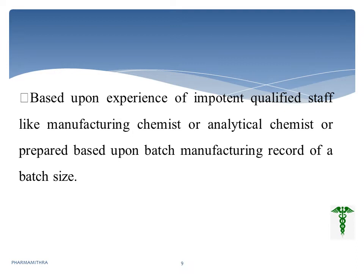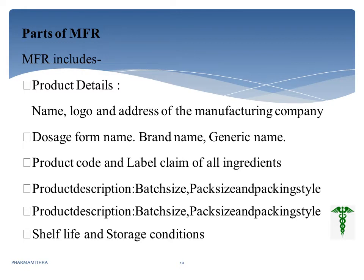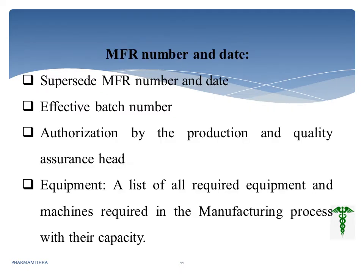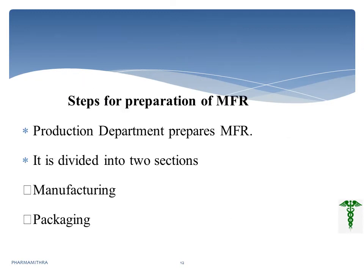Based on the experience of qualified staff or chemists, the batch manufacturing record is prepared based on batch size. It starts with the product details — the name, logo, dosage form, product code, and label claim — followed by the product description such as batch size, pack size, packaging style, shelf life, and storage conditions. They also include the Master Formula Record number and date for cross-verification, as well as the authorized person's signature and the equipment and machines required.